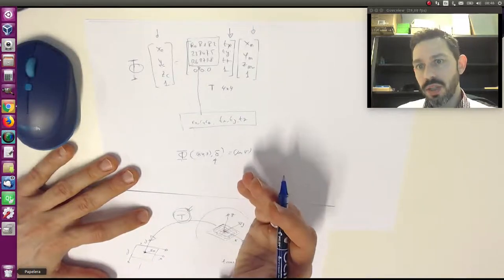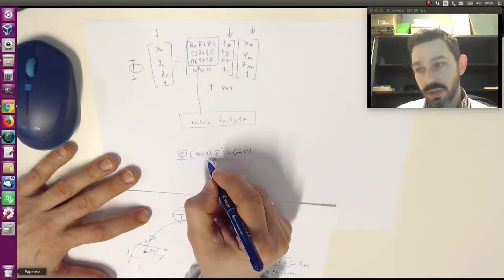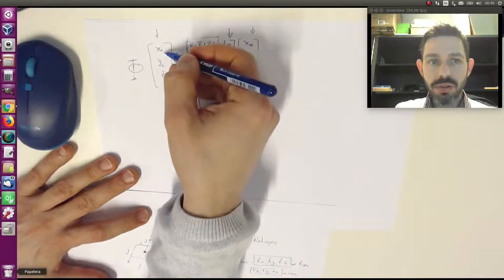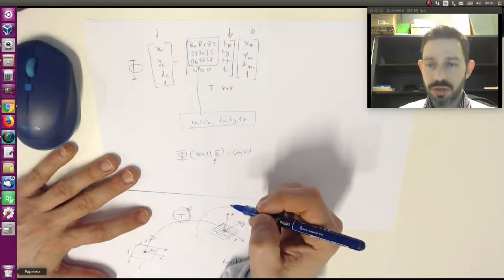I won't go much into detail, but the thing is that if you want to know where a 3D point projects, given that the point is in the camera reference system, you must know the camera parameters, the intrinsic camera parameters.